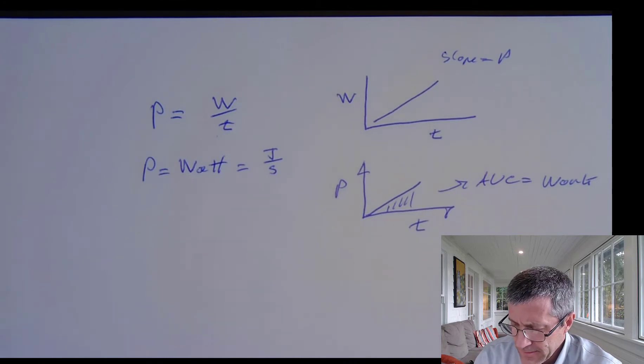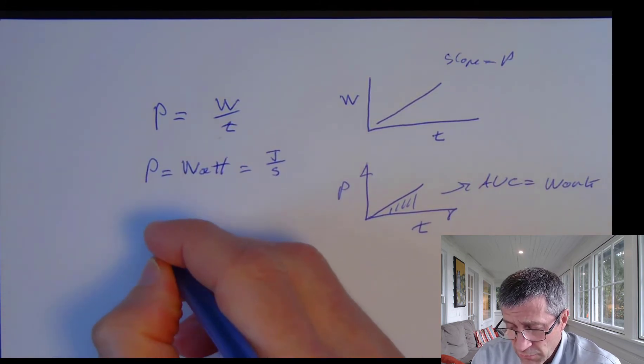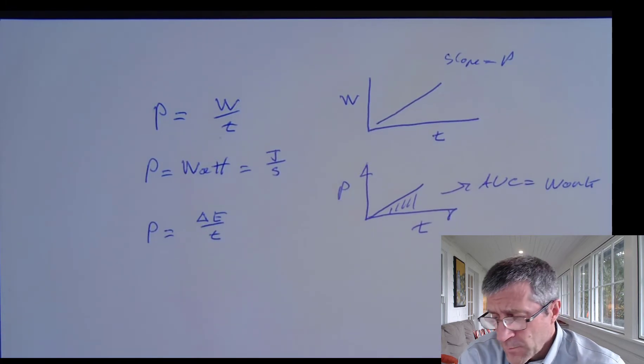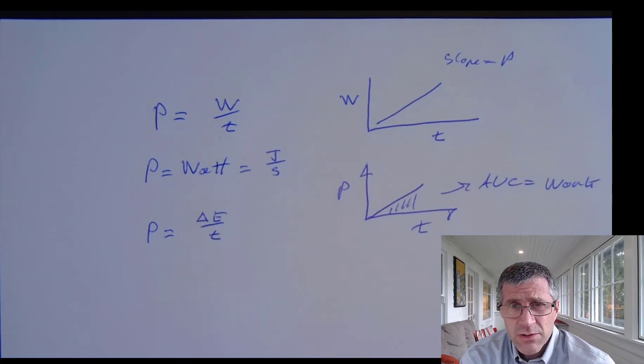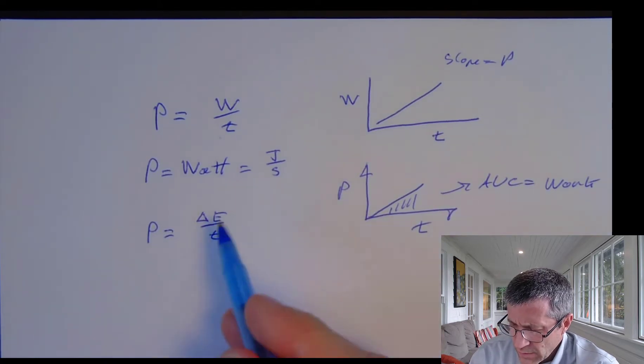A couple of things that are curious about this show that the more general form of power is any sort of change in energy over time. It can come from work, it can come from a change in spring energy. A spring can do work on something to accelerate it, or that spring energy can be used up at a particular rate. So really, it's any change in energy over time. We usually think about it in terms of work, but it doesn't have to be work.